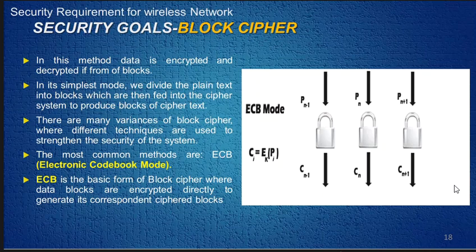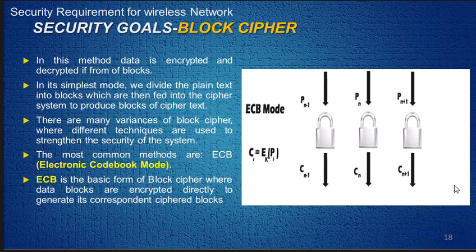How the cipher text is converted into plain text — how the encryption method is done and how the decryption method is done. Encryption is done at the sender stage, and decryption is done at the receiver stage. These are the methods I want to explain.